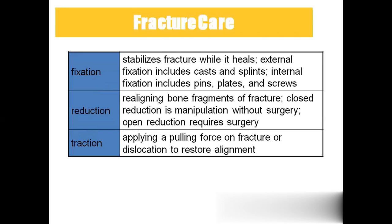For fracture care and fixation: external fixators include casting and splinting. Internal fixation involves surgery using needles, pins, plates, and screws. Reduction is performed for fractures, dislocations, and subluxations — it means fixing the fracture, dislocation, or subluxation with the help of anesthesia. Traction is used to achieve proper alignment of fracture fragments by pulling them. All of this is done under anesthesia, as it would be very painful otherwise.